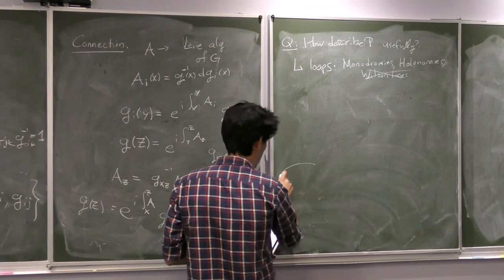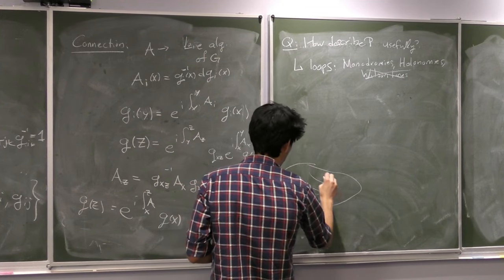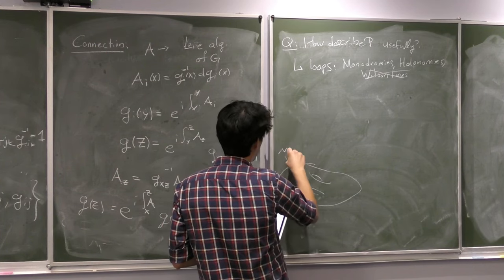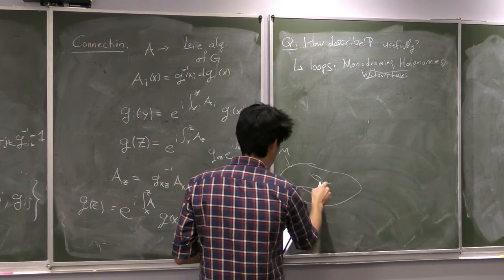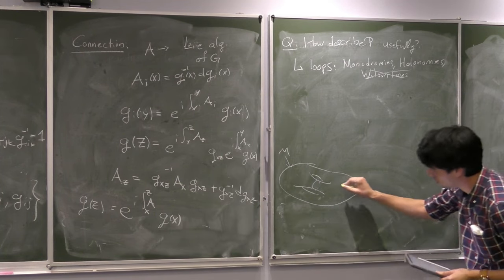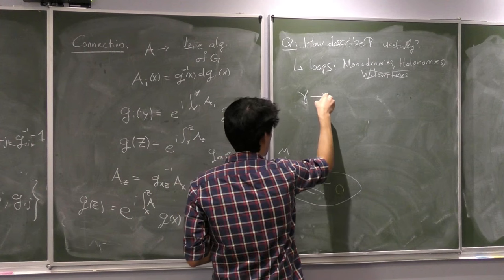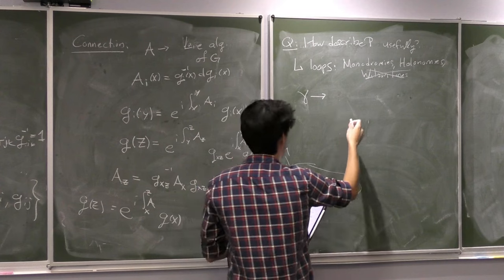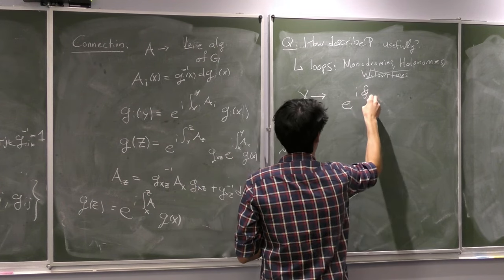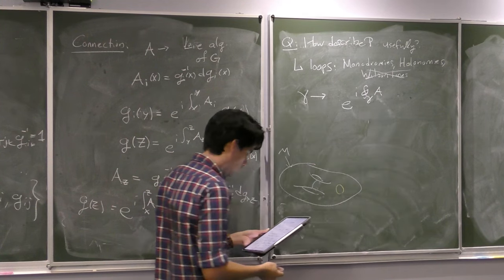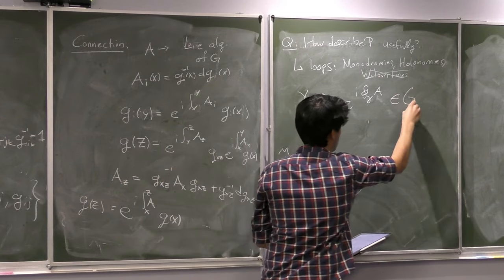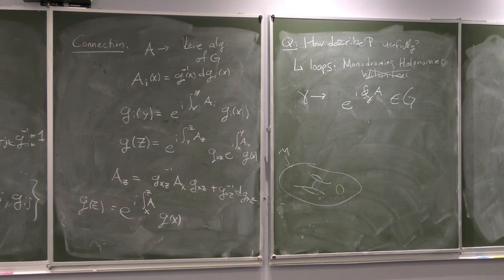Given a loop gamma, you can write down the path-ordered exponential e^{i ∮_γ A}, which gives you a value in G. This tells you how the fiber transforms as you go around the loop. For example, if you go from i to j to k, this integral tells you how the fiber rotates as you go around this loop. As you said, for example on a sphere, if you pick a direction and parallel transport it — you take your arrow, walk down a line pointing down, walk across still pointing down, then go back up — you'll find that your arrow has rotated. This is how holonomy tells you that there is information about your gauge bundle.